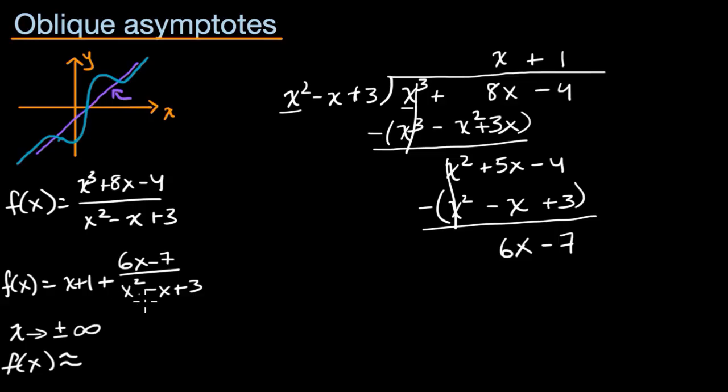as x becomes very positive or very negative, this denominator grows much faster than that numerator. So this thing, as you get very positive or very negative, is going to go to zero. It's going to become a lot less consequential than what we see over here. So f of x is going to be approximately x plus 1.